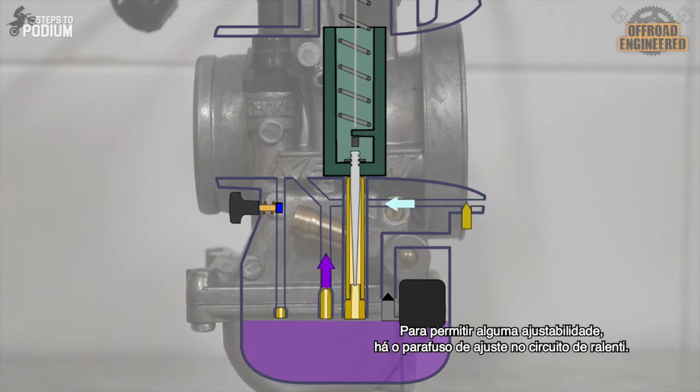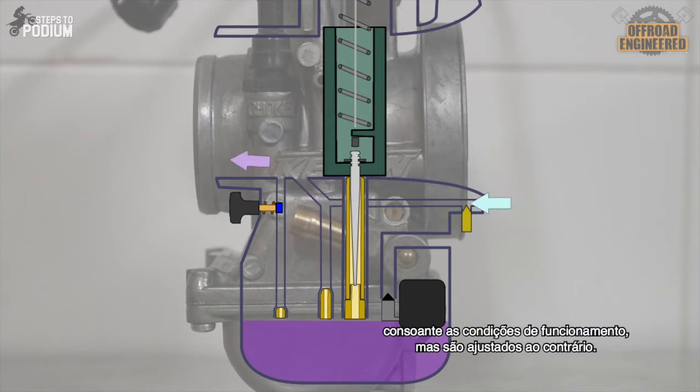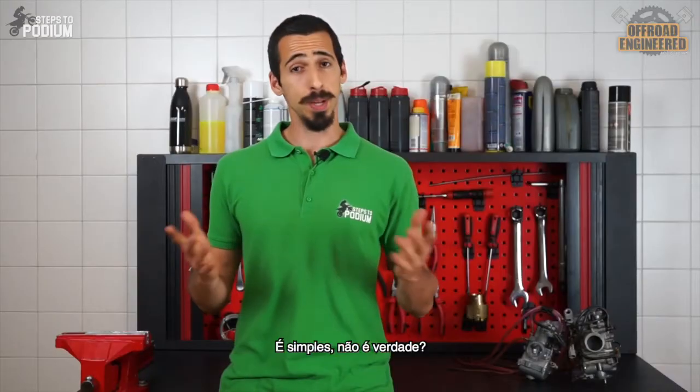To provide some adjustability, there's the adjustment screw in the idle circuit. You can either find an air adjustment screw or a fuel adjustment screw. Both make the idle mixture leaner or richer depending on the running conditions, but are adjusted in reverse. Quite simple, right?